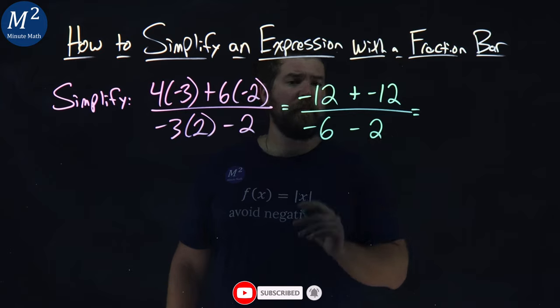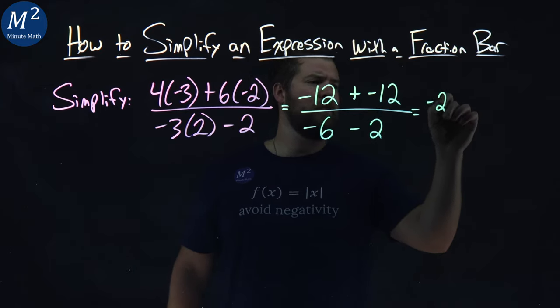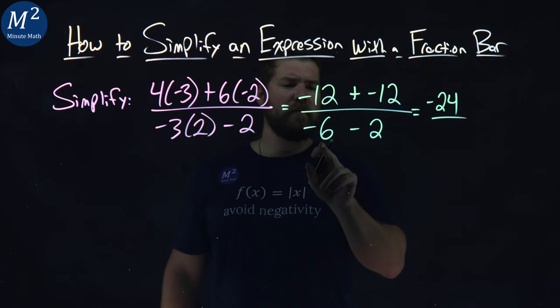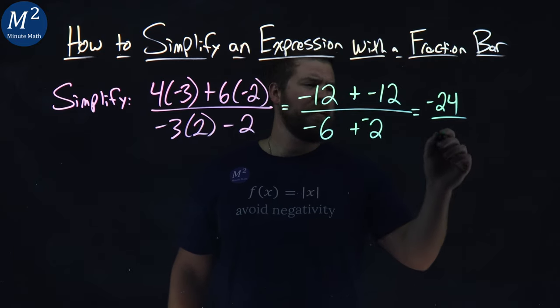From there, negative 12 plus negative 12 is negative 24 over negative 6 minus 2 is like plus negative 2, we have negative 8.